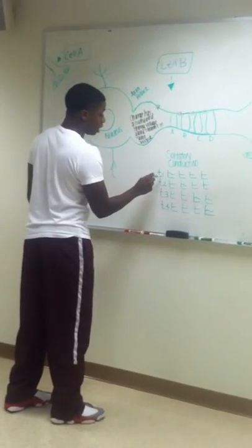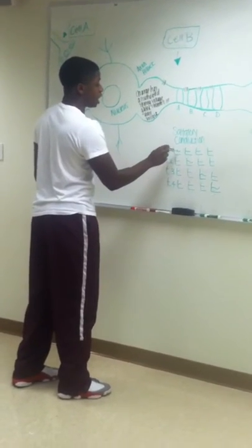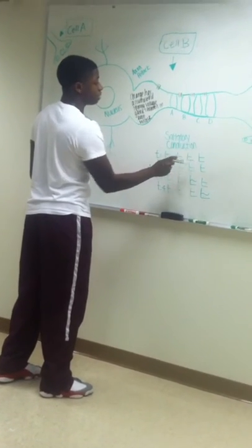As we can see here, at time one, there's an action potential in node A, and nodes B, C, and D are at resting potential. When we look at time two, node A is at resting potential, node B is now at an action potential, and nodes C and D are at resting potentials.